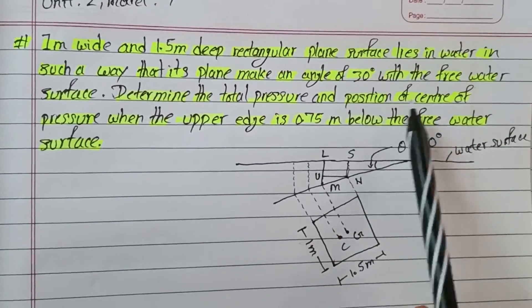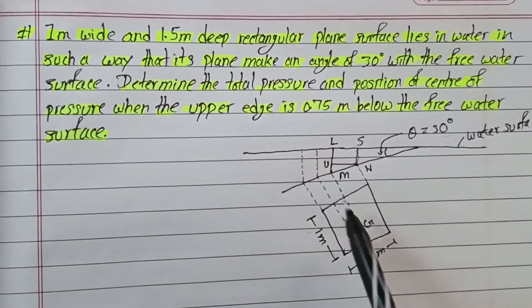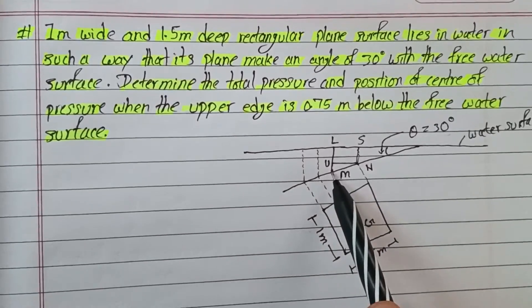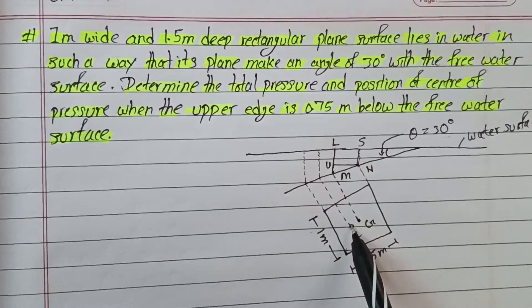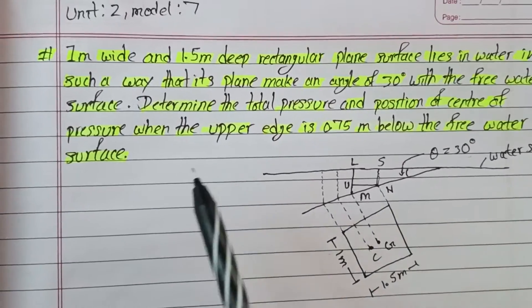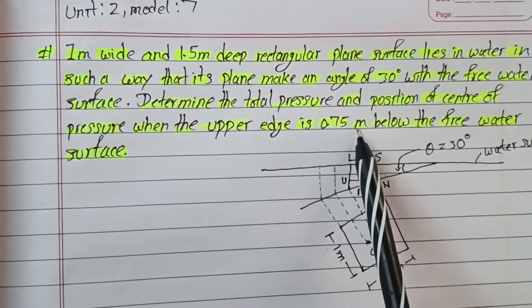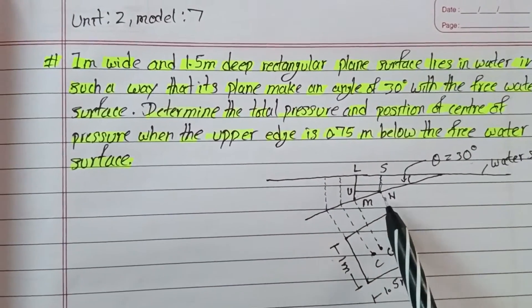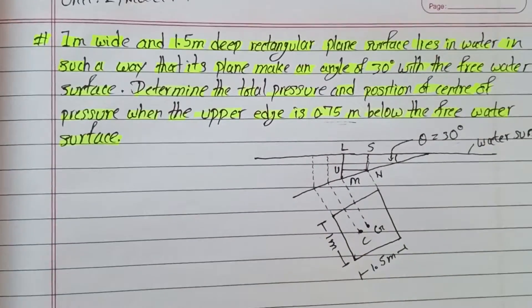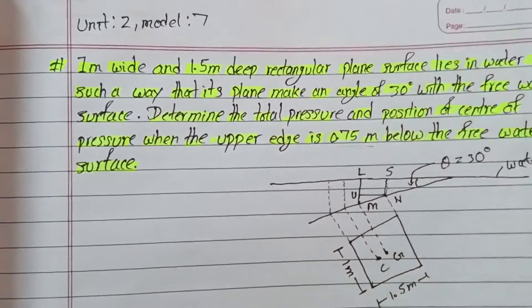The surface is 1 meter wide and 1.5 meters deep. We need to determine the total pressure and the position of center of pressure when the upper edge is 0.75 meters below the free water surface. So the distance from the water surface to the upper edge is 0.75 meters.